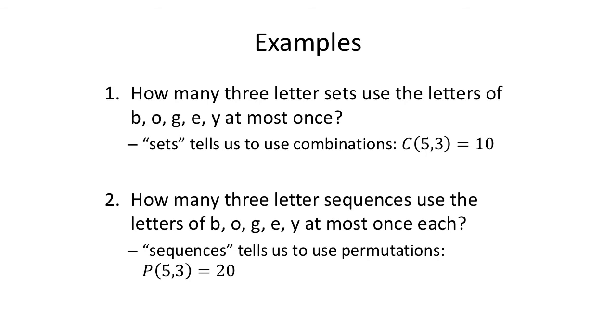How many three-letter sets use the letters of BOGEY at most once? Sets were just a collection. That's combinations. I have 1, 2, 3, 4, 5 letters. I want 3 sets. So combinations. C(5,3) is 10 different combinations. However, if I want 3-letter sequences, let's say on a license plate for your car, I'm using the letters of BOGEY at most once each. Since it's a sequence, it tells us to use permutations. I have 5 letters. I want 3. Order matters. So there's 20 different ways that I could choose the letters using permutations where order matters.